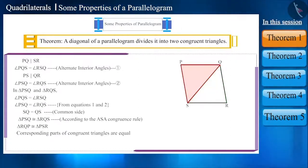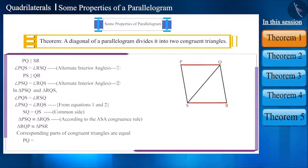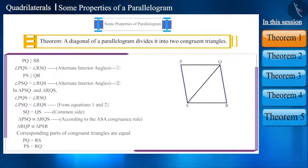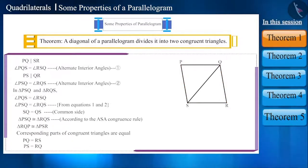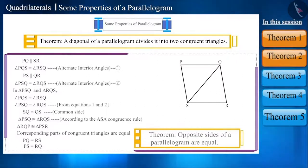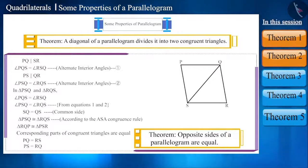Since corresponding parts of congruent triangles are equal, the corresponding sides of these triangles will also be equal. That is, side PQ is equal to side RS and side PS is equal to side RQ. Note that these are opposite sides of the parallelogram. This is another property of a parallelogram and we can write it as a theorem: the opposite sides of a parallelogram are equal.